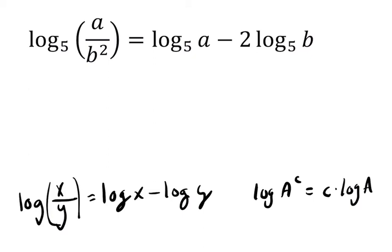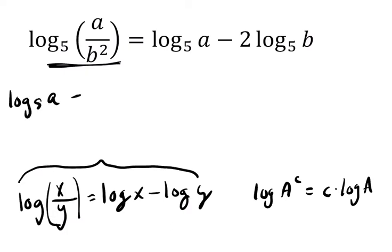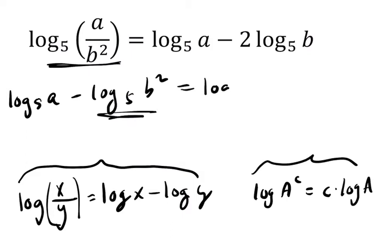So the first thing is I'm going to start over here, and I'm going to use this law. It tells me that this is equal to the log base 5 of a minus the log base 5 of b squared. But then I can use this law here to reduce my second term. So the first one stays as log base 5 of a, and then the second one, I bring this exponent down in the front, and I get twice the log base 5 of b.